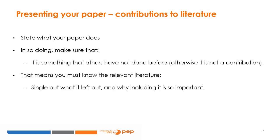Irrespective of your research question, your audience also wants to know what you add to the literature — what is it that you do that was not done before? If your research question is novel enough, then answering it contributes to the literature. But if your research question is a variant of a classic question, people want to know why you revisit it. That's why stating your contributions to the literature is crucial to getting the audience interested. You state what your paper does in a way that indicates it is something others have not done before. It is helpful to start by briefly stating what has been done in the literature, to single out what the literature left out, and explain verbally why including what was left out is so important.